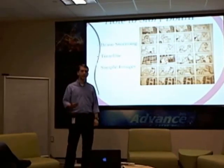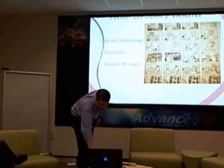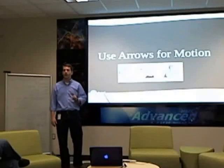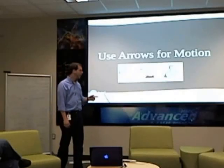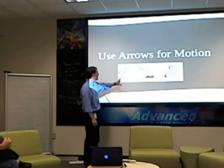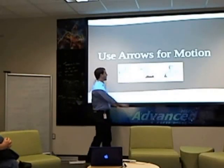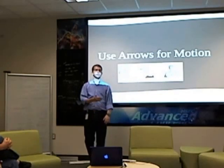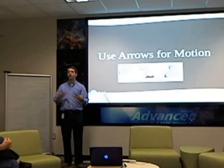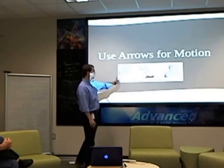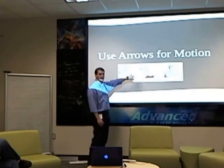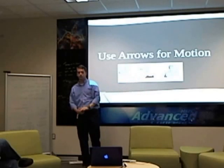Storyboarding is just trying to get across ideas. A few things you need to know about simple images. Number one, use arrows for any motion that happens in the scene. This is a little clip from somebody's storyboard, and you can notice that any time motion happens in the scene, they have an arrow. Because you don't want to draw out every single thing that happens step by step — that takes too much time and it doesn't help the creative process. So you start drawing out every few scenes what's going to happen, and use arrows to direct your motion.